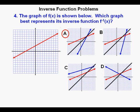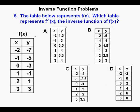Inverse function problem five. The table below represents f(x). Which table represents f^(-1)(x), the inverse function of f(x)? I didn't think this problem was very easy, but there are a lot of ways to do it. I think that what I would do is take the table f(x) and reverse the coordinates, which I've done here in red.